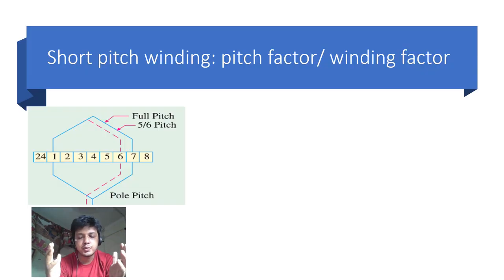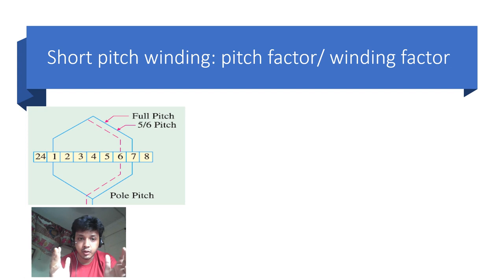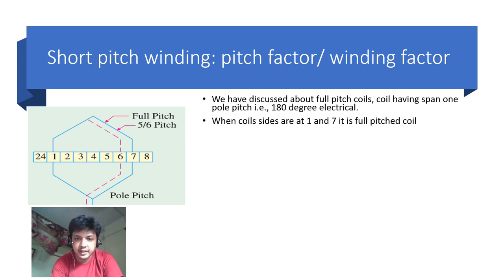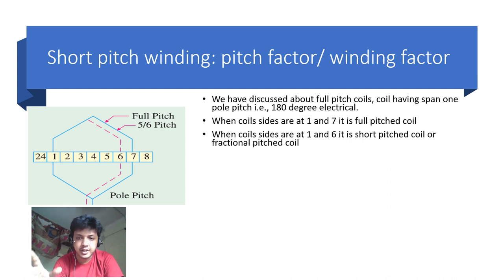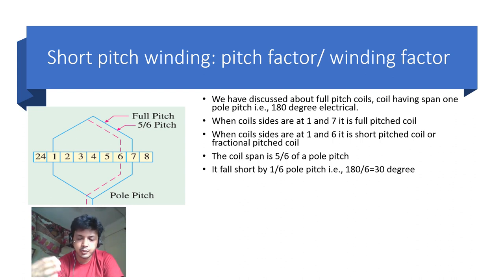Now we are going to discuss about short pitch, pitch factor, and winding factor. In this example the alternator has 24 slots and 4 poles, giving 6 slots per pole. Full pitch equals 6 slots. Therefore, if a coil starts from slot number 1, it will finish at slot number 7 for a full-pitch coil, that is 180 degrees electrical. When the coil sides are placed at slots 1 and 6, it is a short-pitch or fractional-pitch coil.